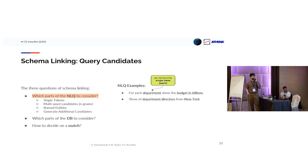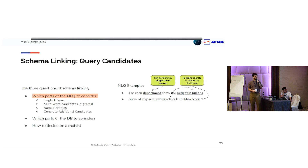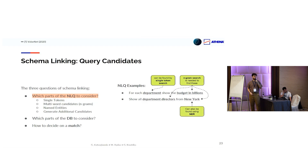For query candidates, there are four ways to discover them. The first and simplest is to consider every single token of the NLQ, taking each word separately. A more advanced technique is to consider n-grams, essentially phrases of multiple words. There are also more advanced techniques, for example named entity recognition, which can help identify mostly value links — for example finding the query candidate 'New York.' However, if 'New York' is stored differently in the database, such as 'NY,' we must generate additional candidates by looking up similar values inside the database or searching on an external knowledge base.